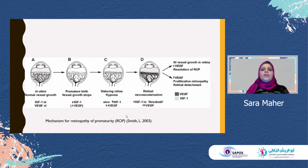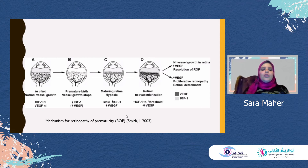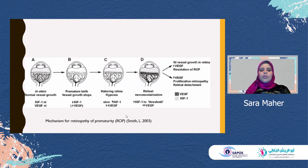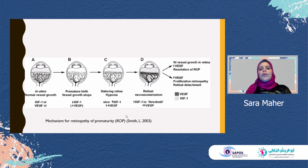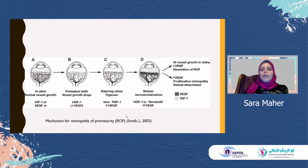This diagram explains the effect of the different factors and their levels during the different phases of the disease. In utero, for normal vessel development, there should be normal levels of both IGF-1 and VEGF. As the baby is born prematurely, normal vascular development stops, with decreased levels of IGF-1 and VEGF. As the maturing neural retina starts to develop, there is relative hypoxia, resulting in increased VEGF expression associated with a slow increase in IGF-1. When IGF-1 reaches the threshold level for activation of VEGF, this results in vigorous retinal neovascularization, which is responsible for all the complications of ROP.